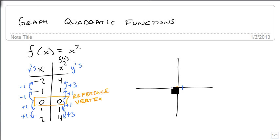We then go over 1 in both directions and up 1 to get our next point. And then over 1 more and up 3. So that's our 2, 4 and our minus 2, 4. And we get the following graph.